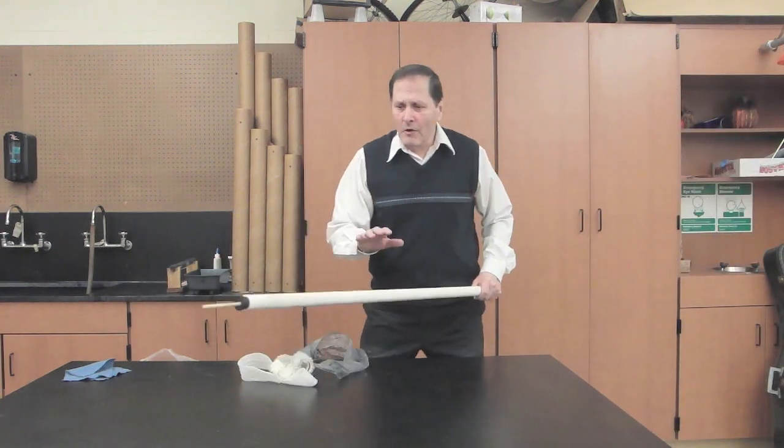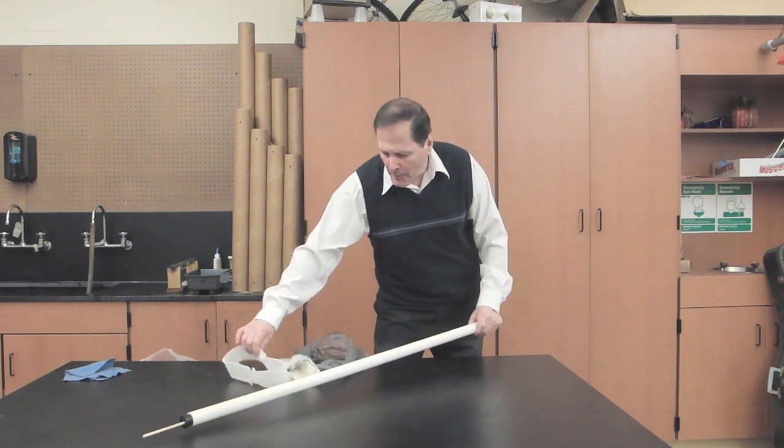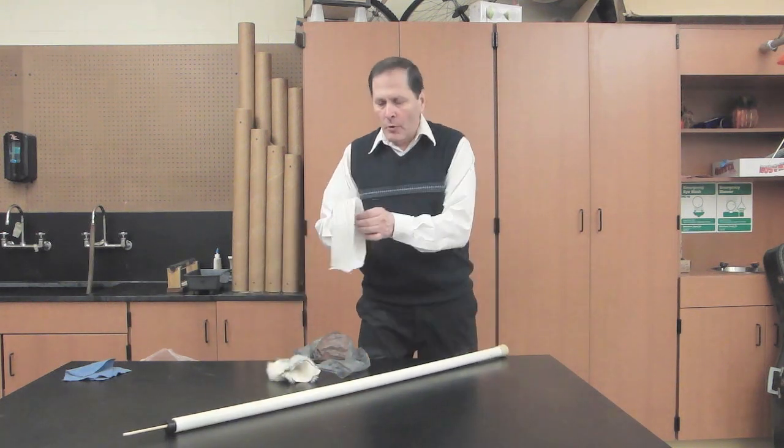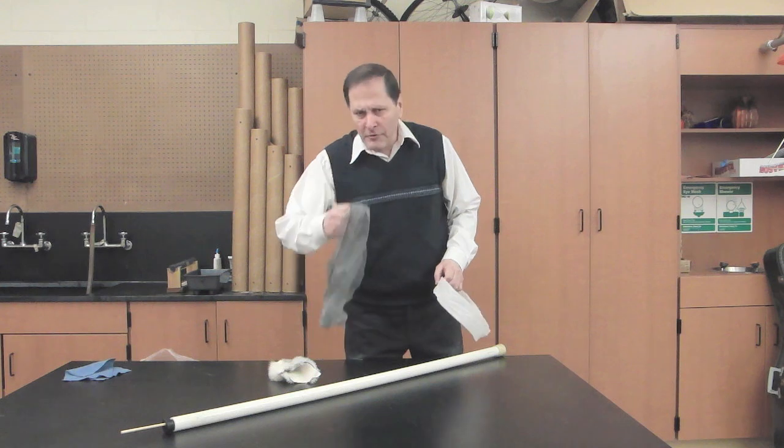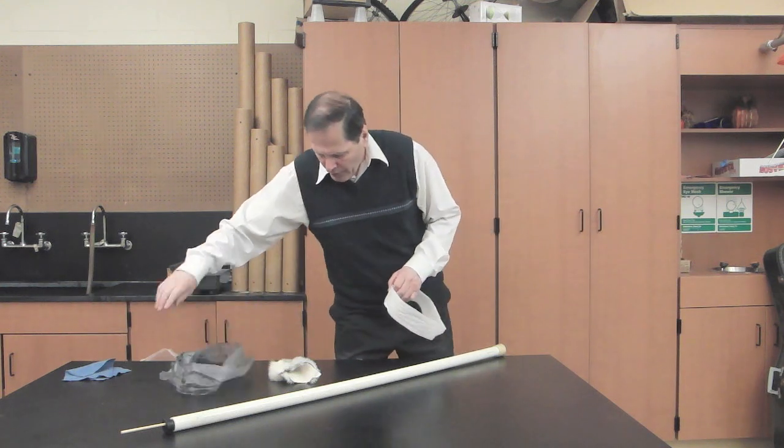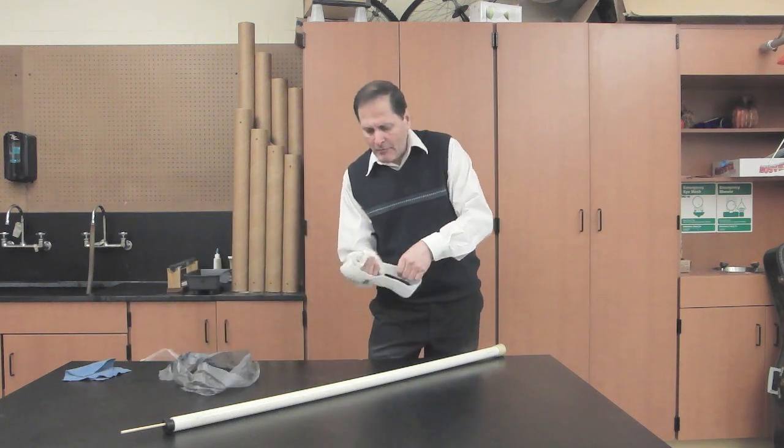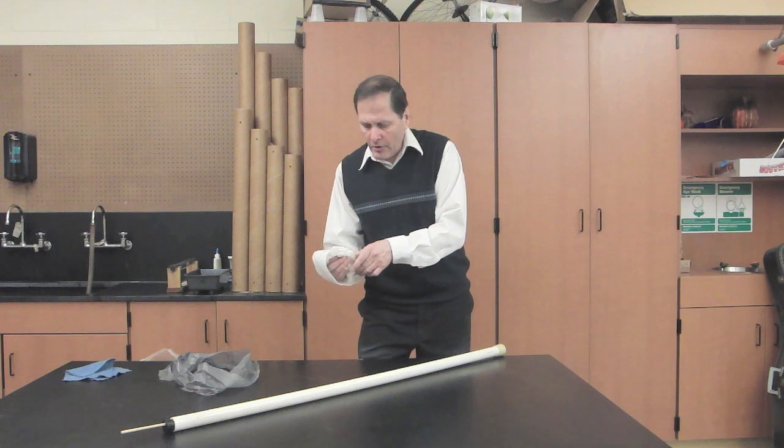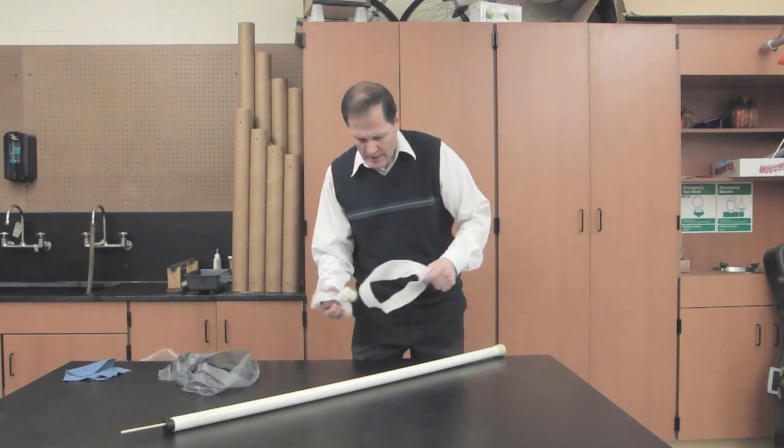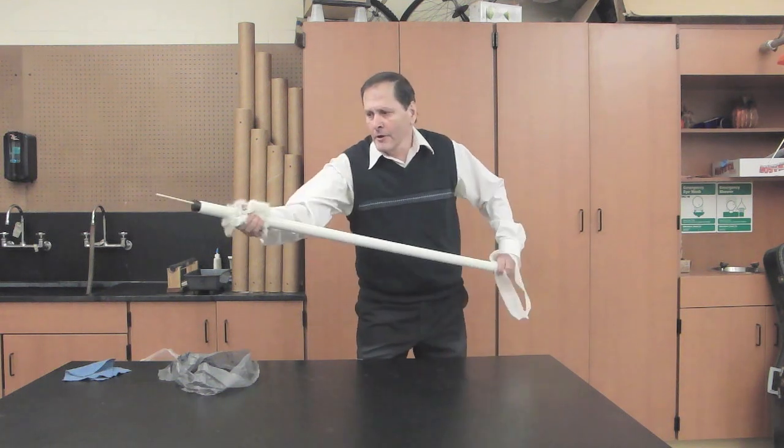All right, now we're going to switch over to PVC pipe and because this is a bigger tube I can get a better charge on it, so we're going to use a little bit larger of a ring. We're also going to try the plastic with it also. So I'm going to start once again by rubbing this with the fur, getting a nice static charge on it, and I'm going to rub this tube here.